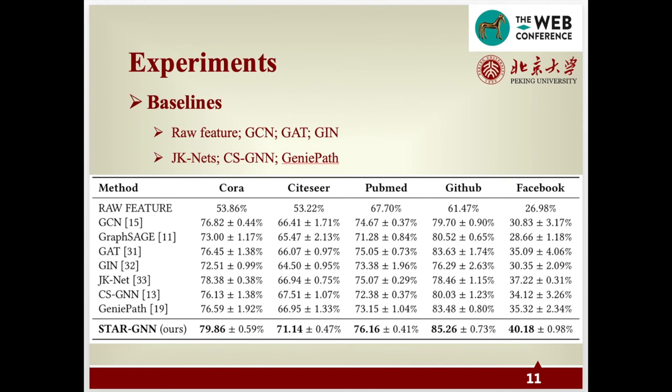Our baseline contains both methods that preserve node proximity and graph neural network models that learn structural representations. Among them, the raw feature is a naive baseline representing the input feature. Graph convolutional networks, GraphSage, and GIN are typical graph neural networks. GAT, JKNets, CSGNN, and GeniePath are designed to handle different weights among neighborhoods. We conduct experiments on the task of node classification. In addition, we randomly sample 20 nodes per label to be used for training when attributes of nodes are available. Then the trained models are evaluated on 1,000 test nodes, and 500 additional nodes are used for validation purposes.